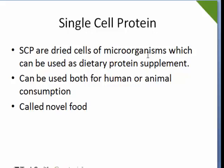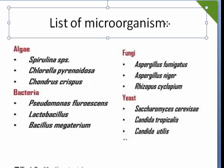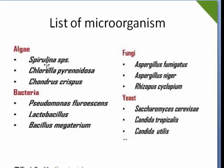The microorganisms are dried. When dried, the microbes become dead and cannot be harmful for us, and they can be used as a protein supplement — both for human and animal. That is called single cell protein. Some microbes that are used as single cell protein include algae, bacteria, and fungi. You can memorize these names from the list of microorganisms used in single cell protein.